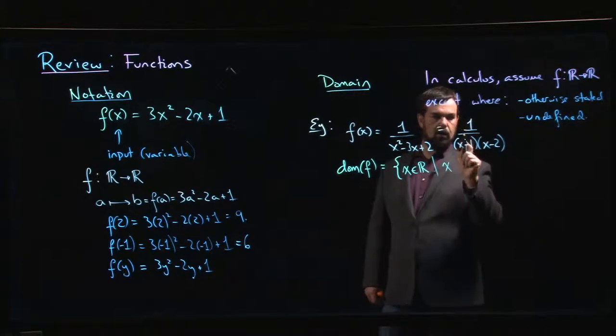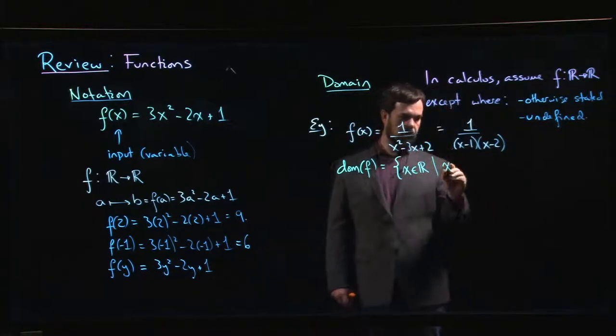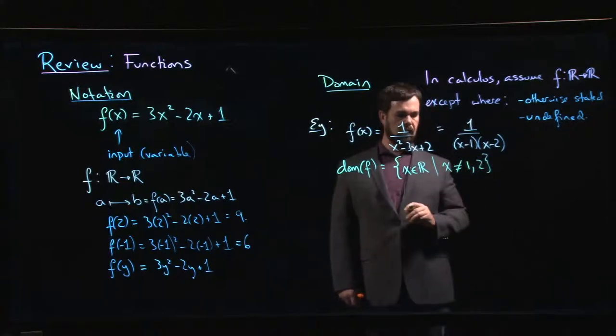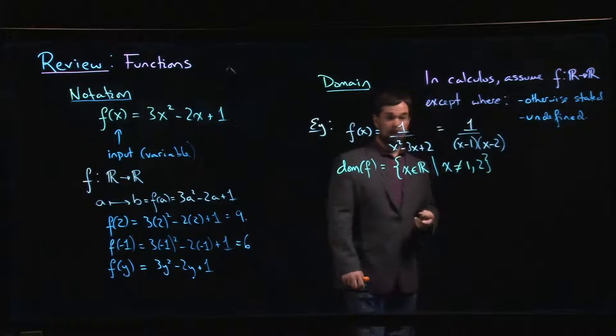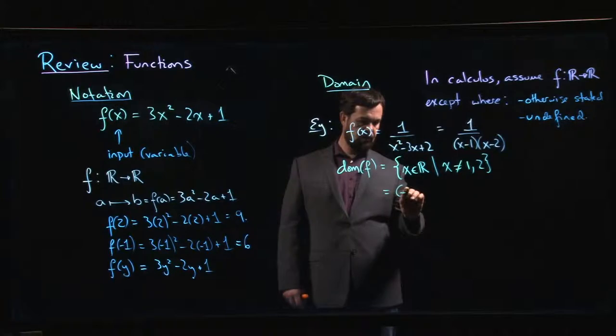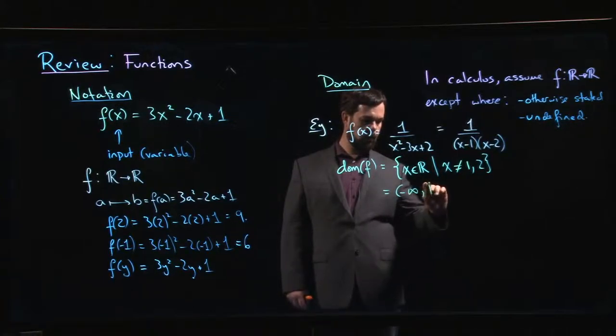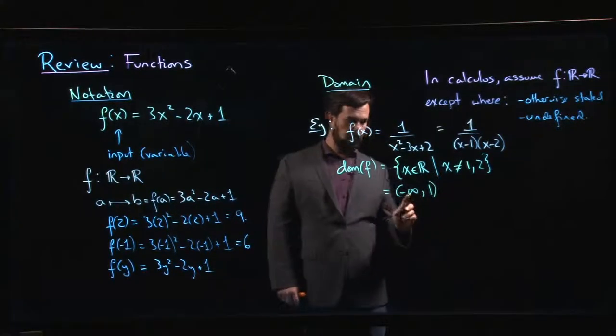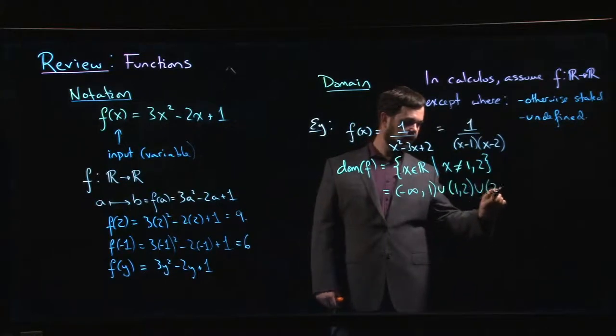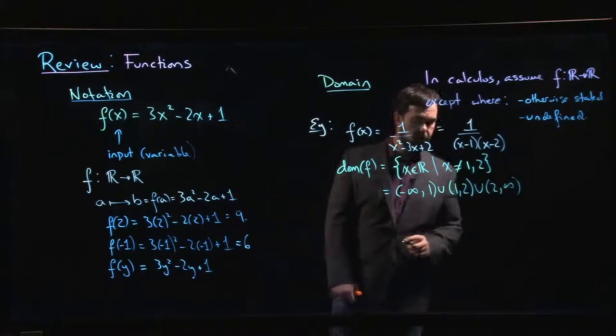So that means x can't be one, because one minus one would be zero, x can't be two because two minus two is zero. So there are two values of x that are not allowed. So I could write it like that. If you want, you could also write it as an interval. You could say well it's everything from minus infinity up to one, open bracket because we don't want to include one, union everything from one to two, again open brackets, and then everything from two to infinity. There's another way that you could write that set.